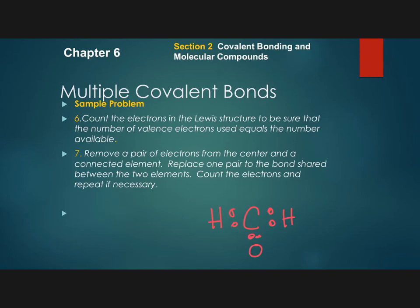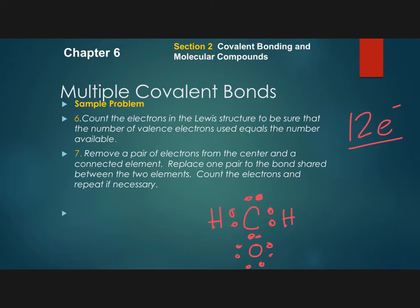The next step is to finish filling out the octet rule and verify that the number of electrons in our picture matches the math step calculated earlier. Carbon needs two more for its octet, and oxygen needs more dots as well. Counting the electrons in the picture: 2, 4, 6, 8, 10, 12, 14 — we have fourteen electrons, but we only need twelve. So we need to share more electrons. We're going to remove one lone pair from the oxygen and one lone pair from the carbon — always picking free unshared electrons on two adjacent connected atoms.